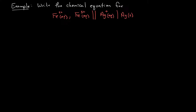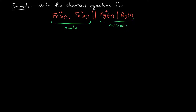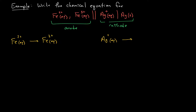Now here's an example going the other direction: given the cell notation, write the chemical equation. On the left we have the anode and on the right we have the cathode. The anode reaction shows iron two-plus going to iron three-plus. The cathode reaction shows silver-plus going to silver solid.